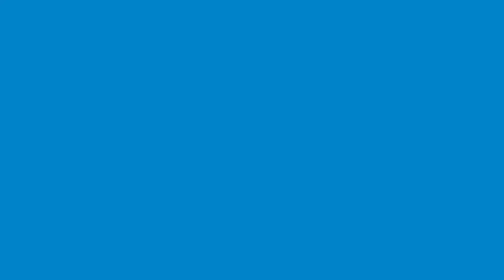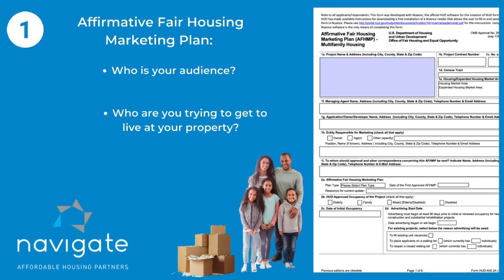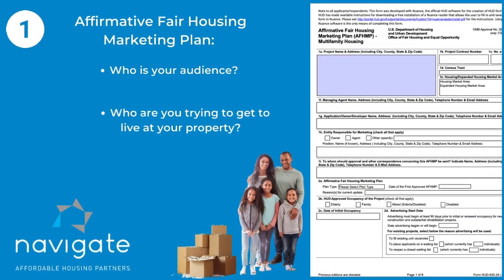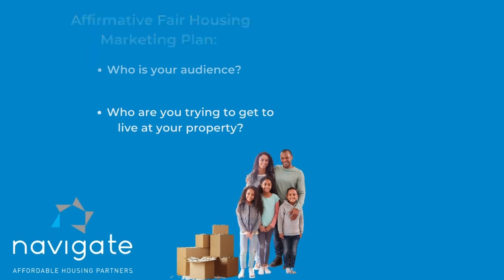You have to have an Affirmative Fair Housing Marketing Plan, which tells who your audience is, who you're marketing to, who you're trying to get to live at your property. The old rule of thumb is that you're marketing to those that are least likely to apply.